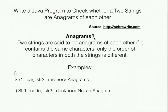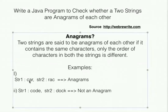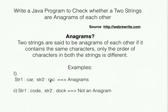Before solving this problem, let's first understand what an anagram is. Two strings are said to be anagrams of each other if they contain the same characters — only the order of characters in both strings is different. For example, string one is 'car' and string two is 'rack'. In both strings the character count is the same: C, A, and R are all present in both.